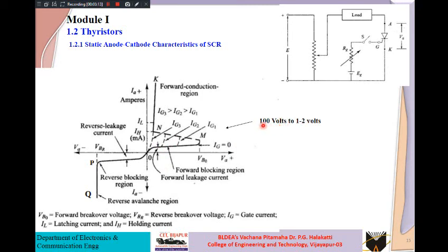During the blocking region the voltage can go up to around 100 volts with minimal leakage current, because the width of the middle junction J3, which is reverse biased, is very large. Once you apply forward bias voltage beyond the breakover point, avalanche effect occurs at J3, the junction width reduces, and the voltage across the SCR drops from 100 volts to around 1.2 volts with a corresponding rise in current.